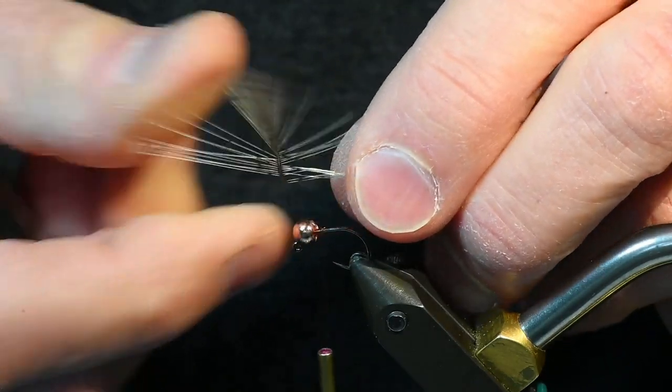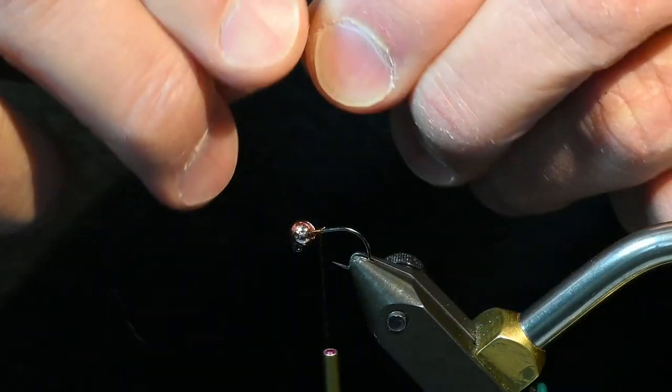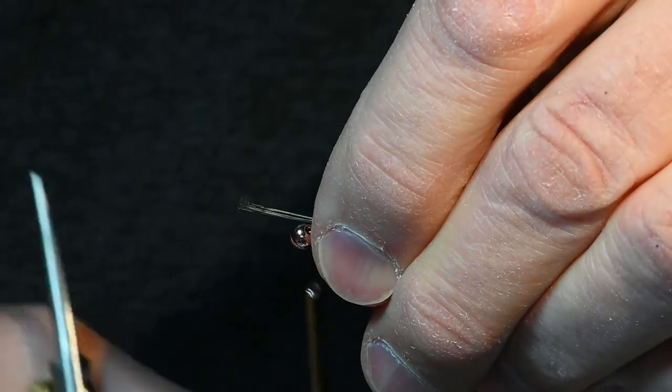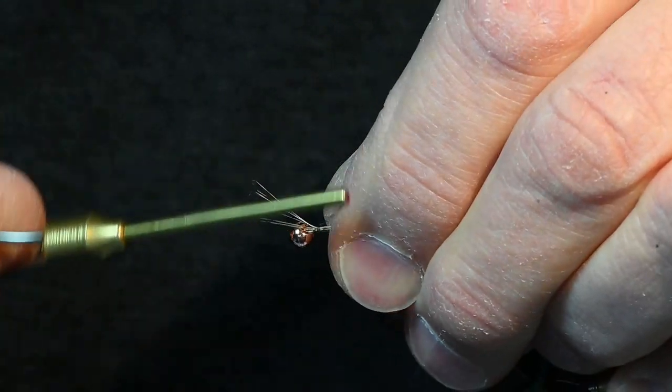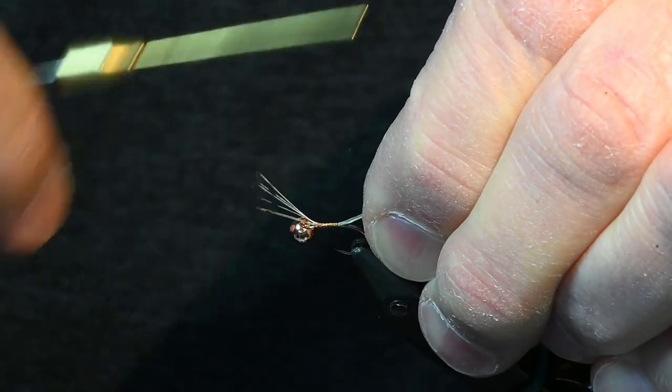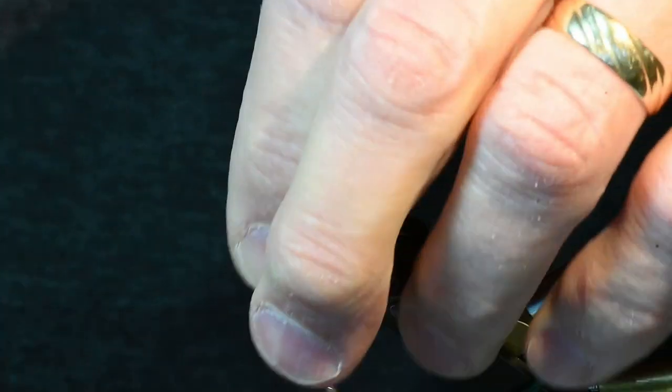I pull them directly away from the stem and I have about a body length for the fibers for the length of the tail. I use touching turns going back just to the bend of the hook.